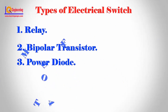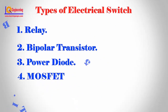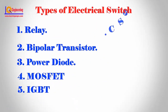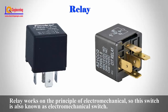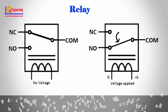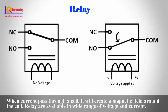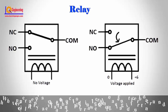Relay works on the principle of electromechanical operation, so this switch is also known as an electromechanical switch. When current passes through a coil, it creates a magnetic field around the coil. Relays are available in a wide range of voltages and currents.